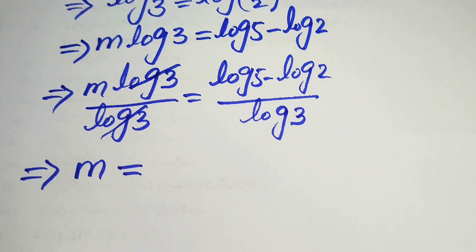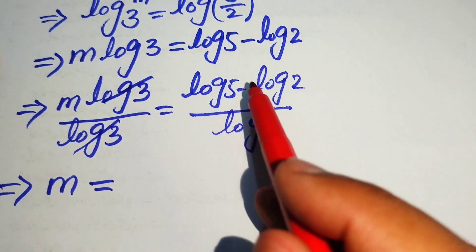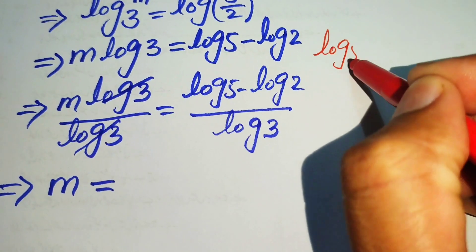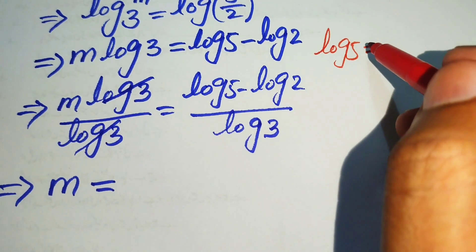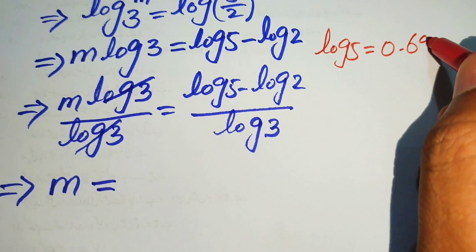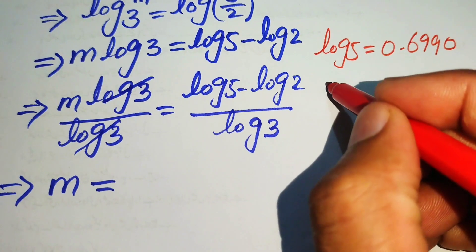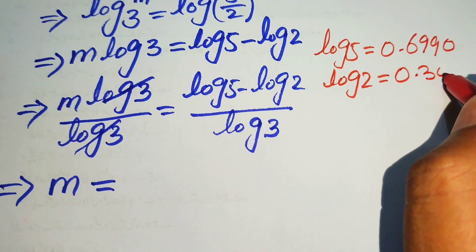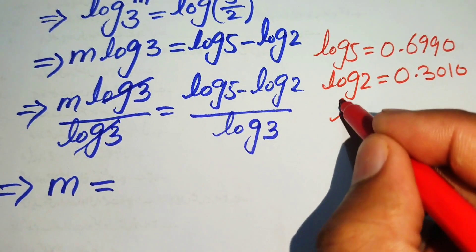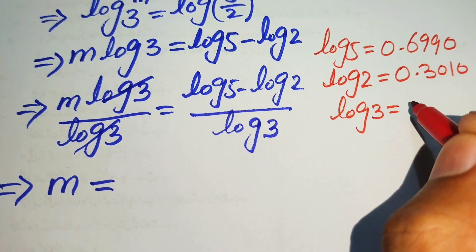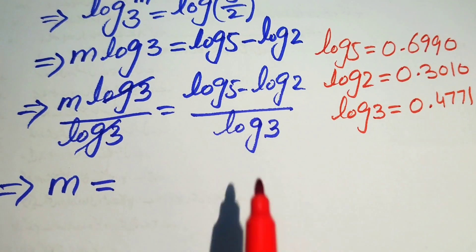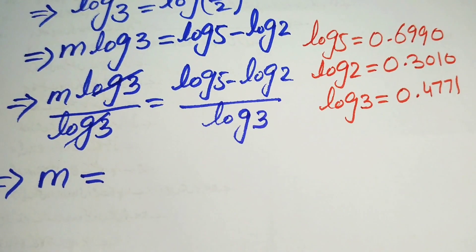We can use a calculator or log table to find the values. The value of log 5 is 0.6990, the value of log 2 is 0.3010, and the value of log 3 is 0.4771.